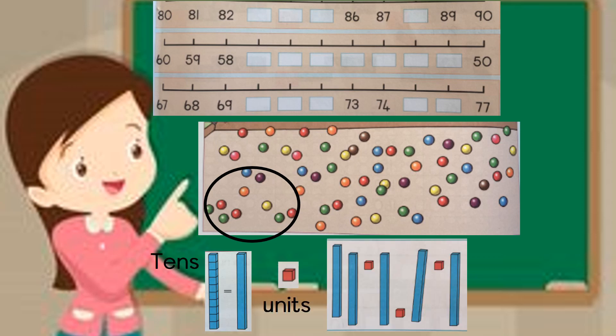To show 10s we usually use a long strip like this. And to show units we show a single block like that. Now knowing those are 10s and units, look at the picture and estimate first how much it is. After you've done that, go and count and see how close you were.